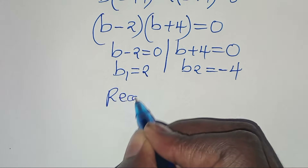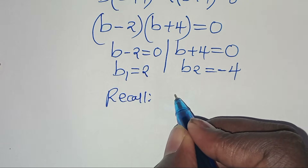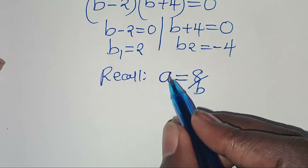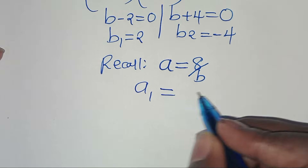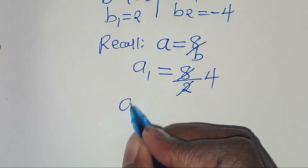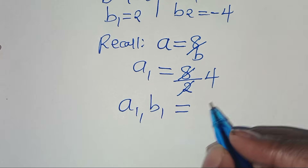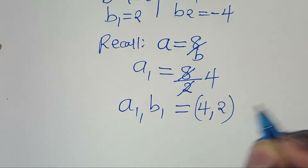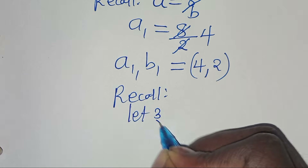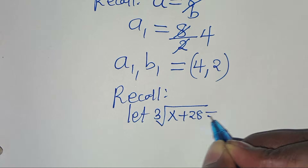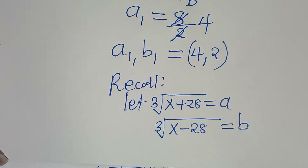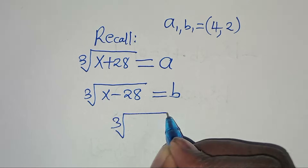Recalling equation 3, a equals 8 over b. Using b equals 2, we get a1 equals 8 over 2, which is 4. So the pair (a1, b1) equals (4, 2). We also recall that the cube root of x plus 28 equals a, and the cube root of x minus 28 equals b.